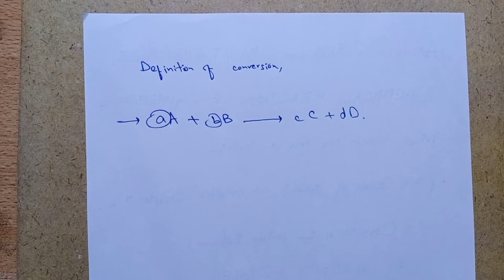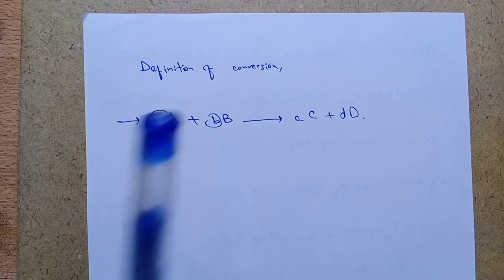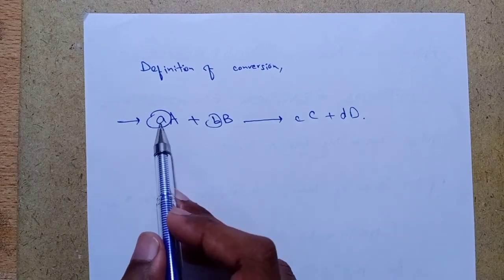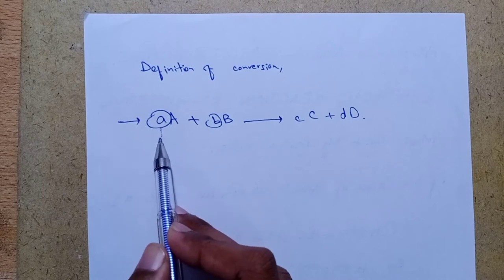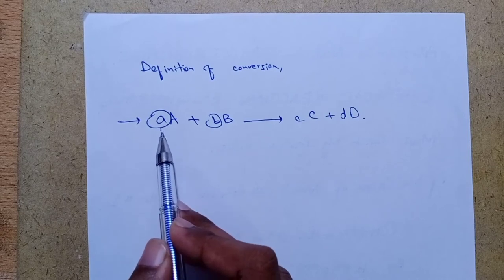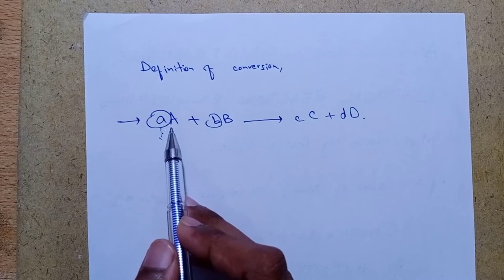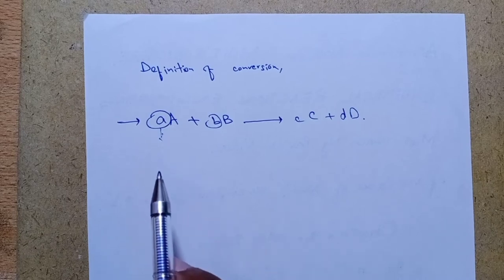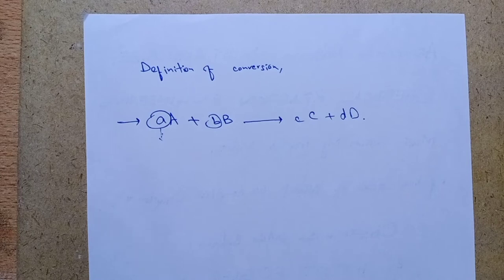The general reaction is A + B → C + D, where moles and stoichiometric calculations apply. The uppercase letters represent chemical species — A is a chemical species — and the lowercase letters represent stoichiometric coefficients. Taking species A as the basis of calculation, we divide the reaction expression through by the stoichiometric coefficient of A.